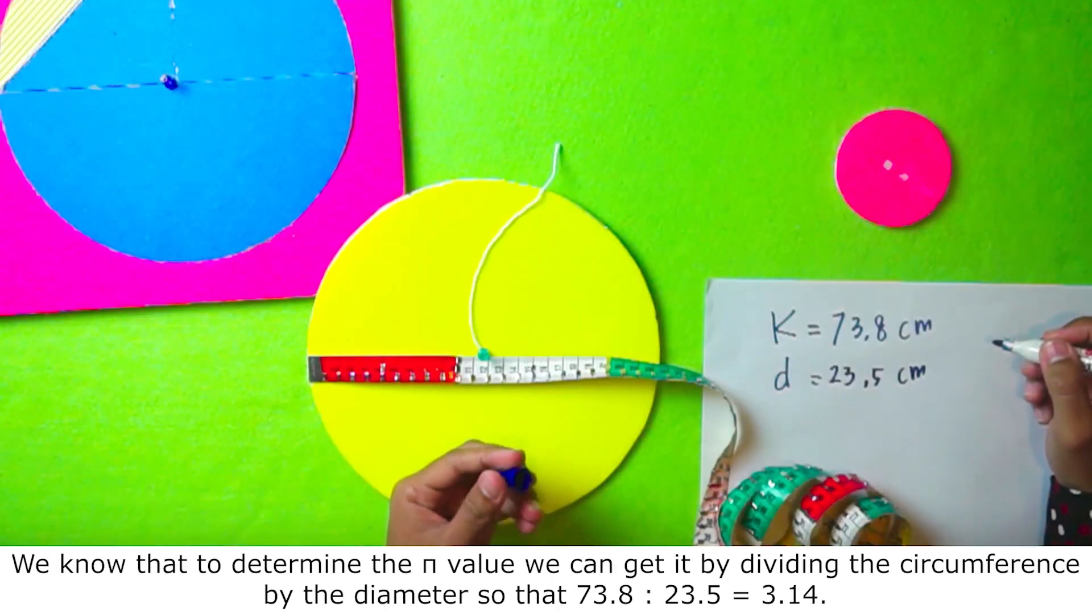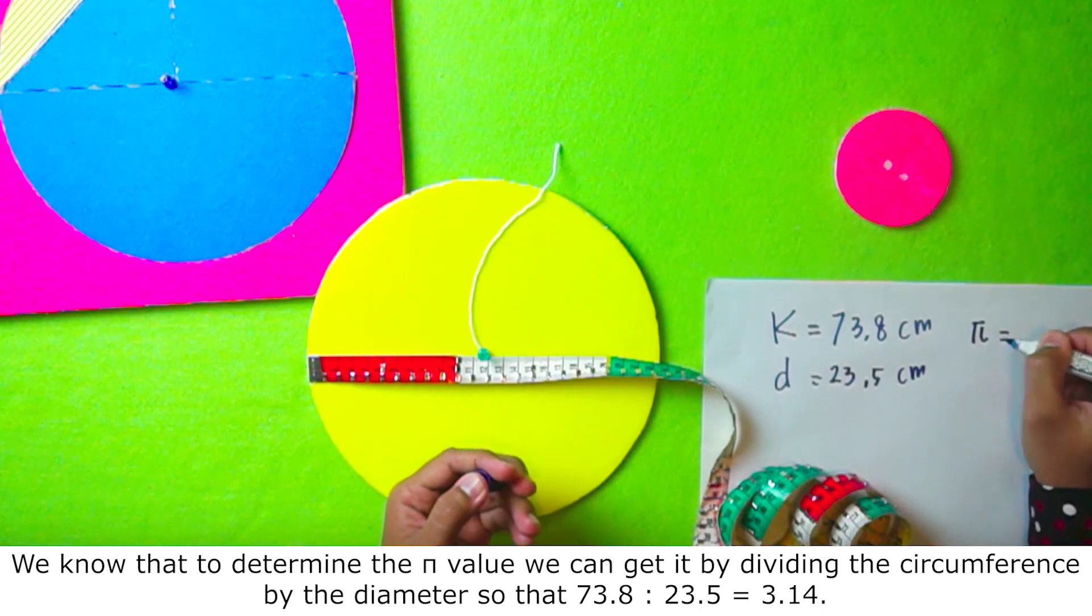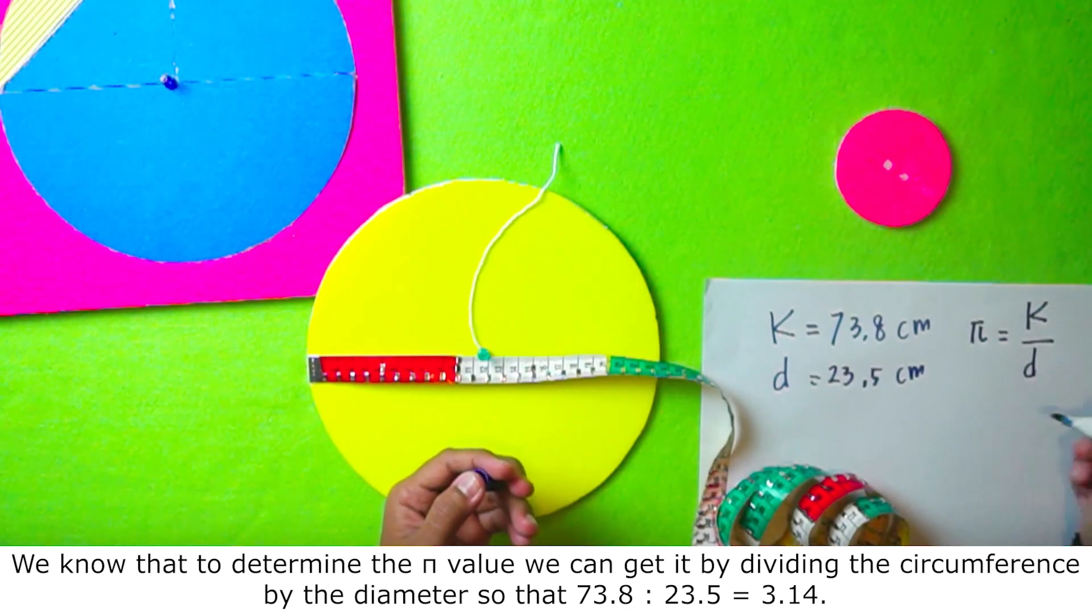We know that to determine the pi value we can get it by dividing the circumference by the diameter. So, that's 73.8 divided by 23.5 equals 3.14.